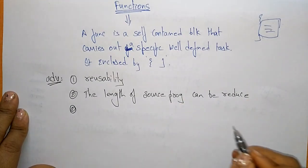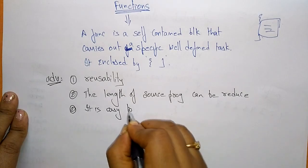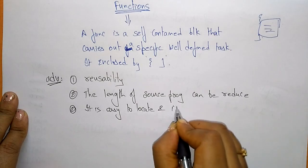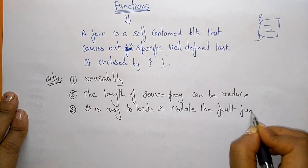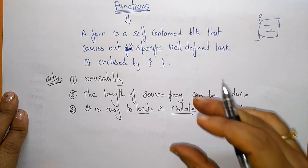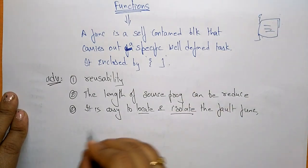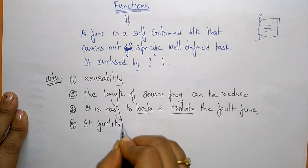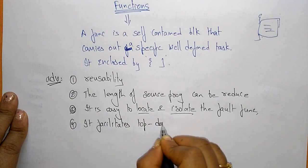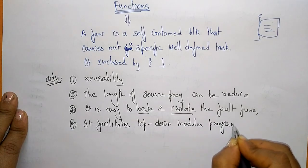It is easy to locate and isolate the fault in a function. If any error occurs, it is easy to locate because it will be specified in a particular block — you only need to check that block. It also facilitates top-down modular programming, as functions always follow the top-down approach.